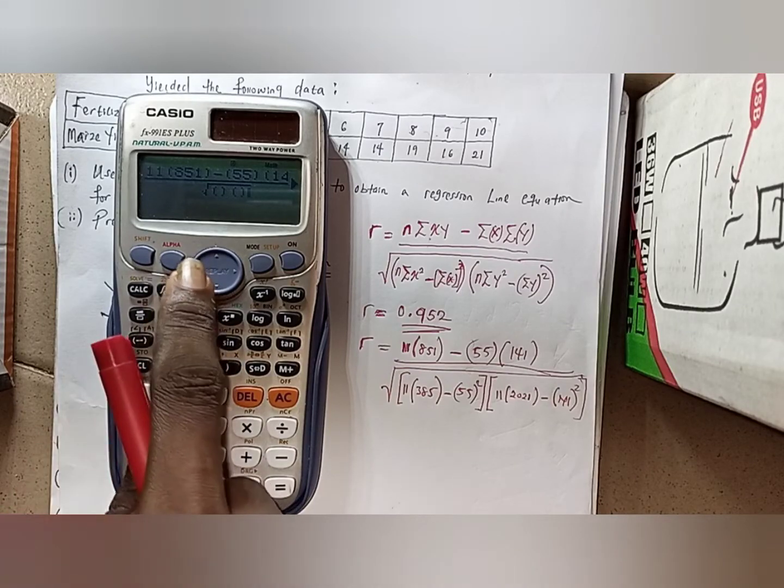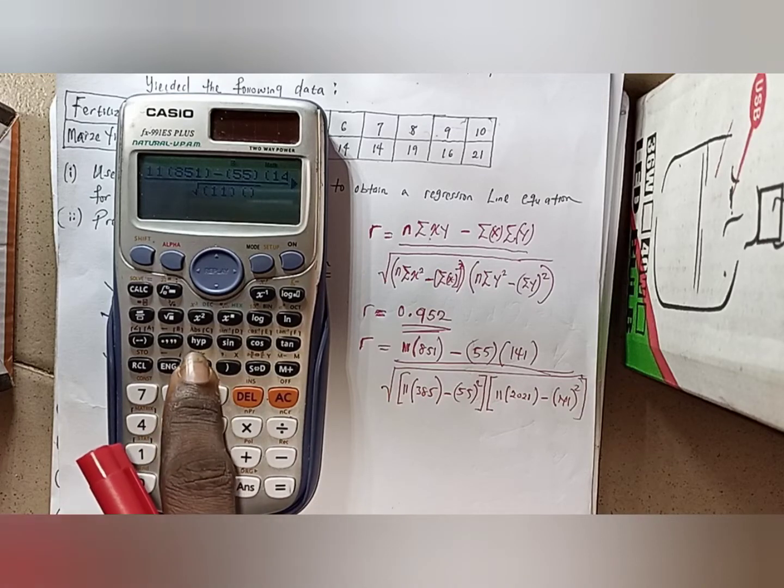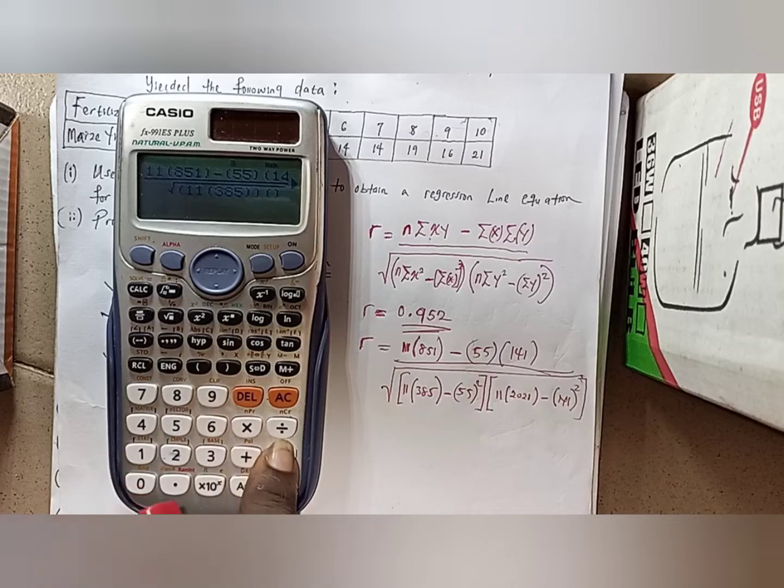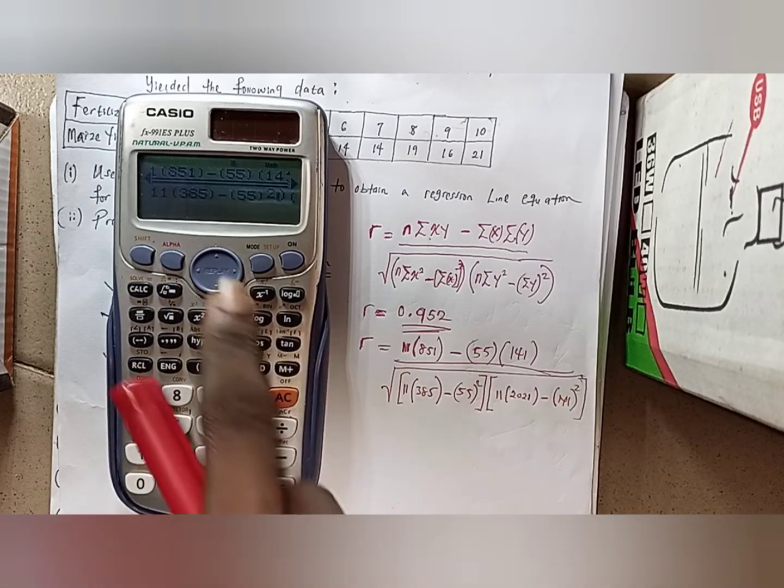Then you have a square root of two products. Move inside the first product and then compute whatever you need: 11 times open a bracket 385, close the bracket, minus open another 55, close it, then square it. I think that's all, then move to the second bracket.